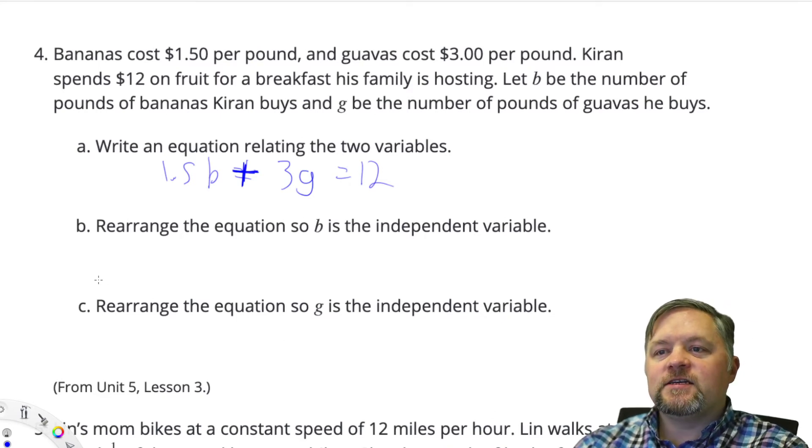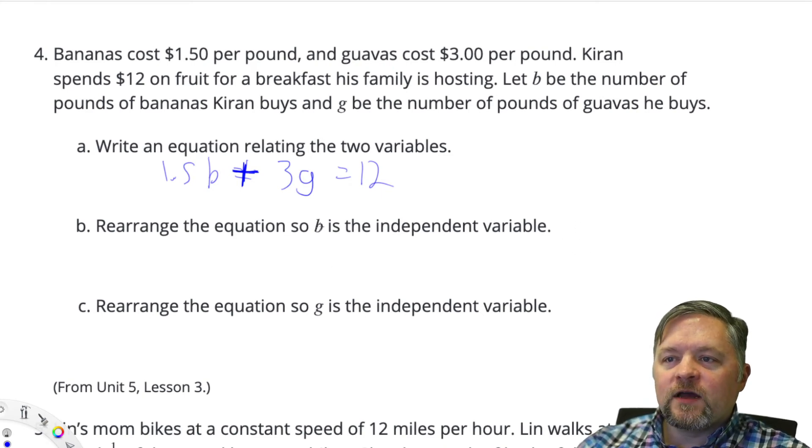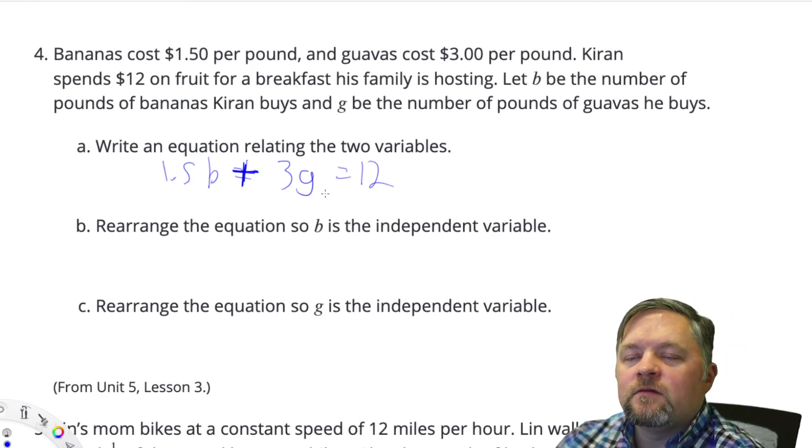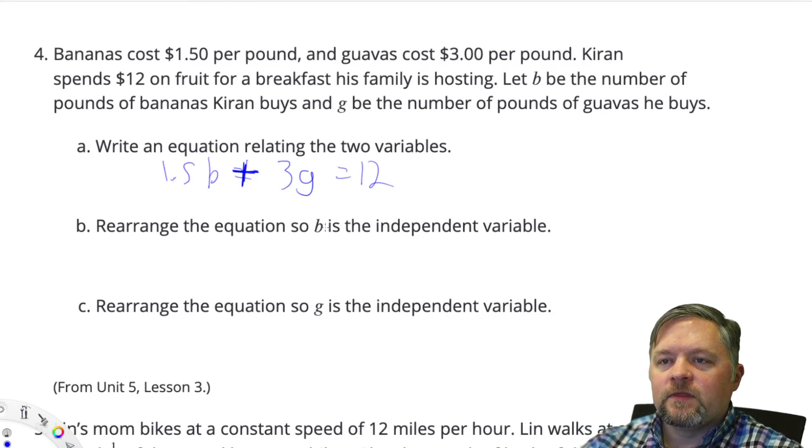This says rearrange the equation so that b is the independent variable. So if we want b to be independent, g depends on b. So we want an equation to have g in it. We want to wind up with g equals something.